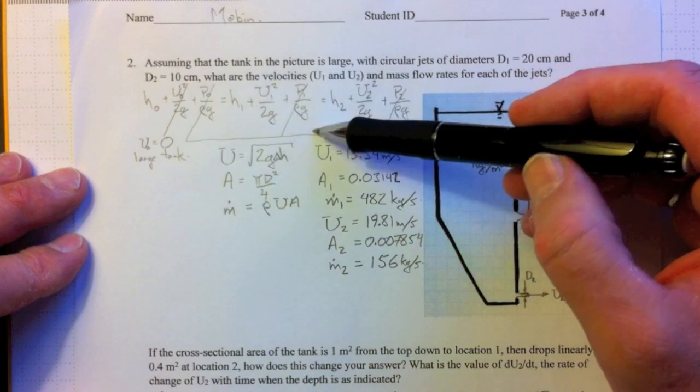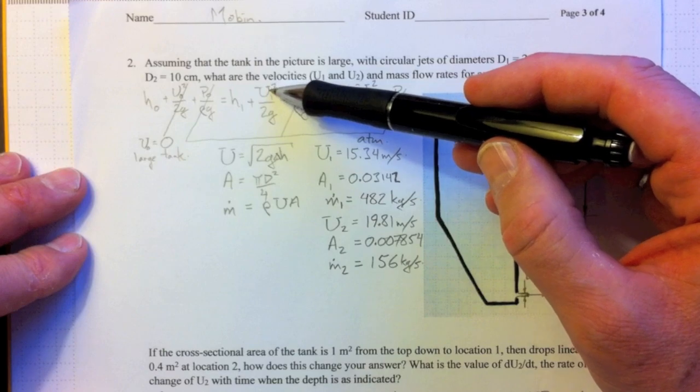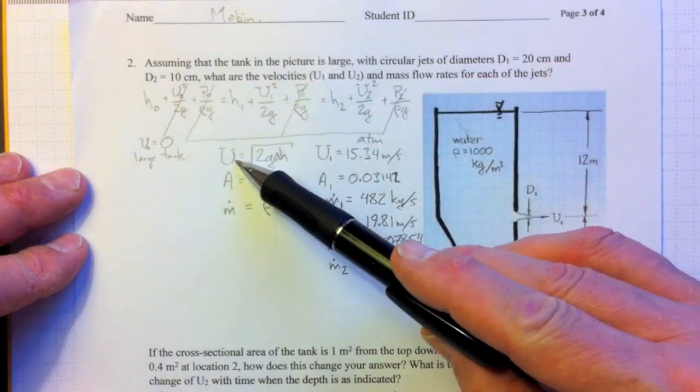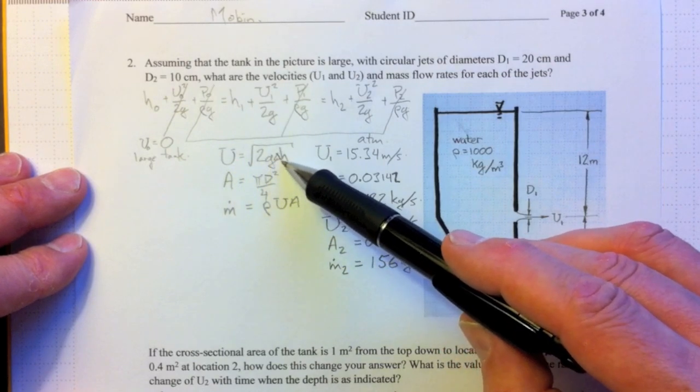If we look at just the first half of the equation, then we've got the velocity coming out of the jet, we've got the difference in heights, that's all that's involved. Rearranging, the velocity will be square root of 2G delta H.